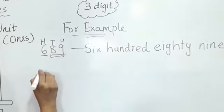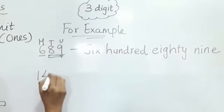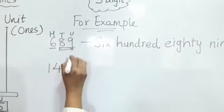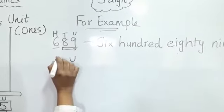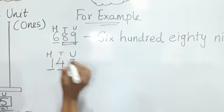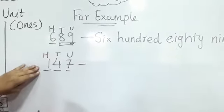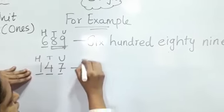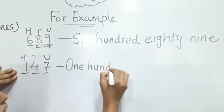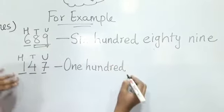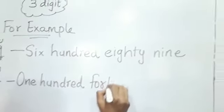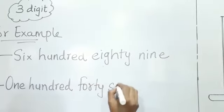One more example — this is 147. 7 is the unit, 4 is the tens, and 1 is the hundreds. We will write one hundred forty seven.